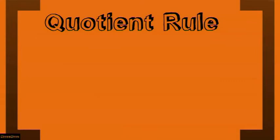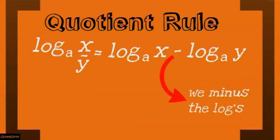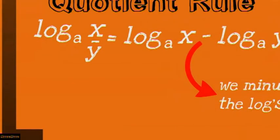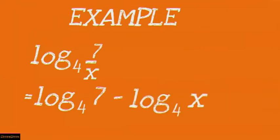The quotient rule states that if given log base a of (x over y), this will equal log base a of x minus log base a of y — we subtract the logs. For example, if given log base 4 of (7 over x), this will equal log base 4 of 7 minus log base 4 of x.